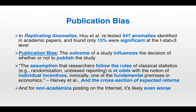Publication bias is when the outcome of a study influences the decision of whether or not to publish it. Harvey et al. in 'The Cross-Section of Expected Returns' explained that the assumption that researchers follow the rules of classical statistics — randomization, unbiased reporting — is at odds with the notion of individual incentives, ironically one of the fundamental premises in economics. Imagine you're a researcher whose job is to find anomalies, but finding true anomalies in financial markets is very difficult. You have to publish something to keep your job. So this is the big problem with finding trading strategy ideas in academia. You still have to look because 15% were significant — that's non-zero — but you have to swim through a lot of garbage to get there. And for non-academics posting on the internet, it's likely even worse.